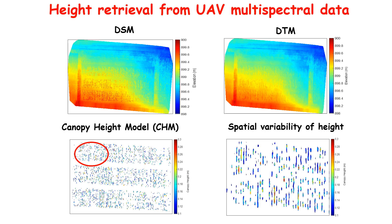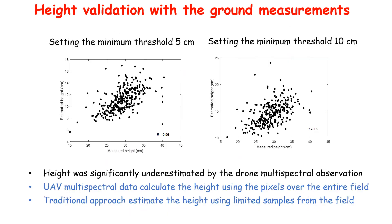Here is the height retrieved from the UAV multispectral data. We performed the subtraction between the DSM and DTM in order to calculate the Canopy Height Model. From the Canopy Height Model, we can capture the spatial variability of the crop height within a single field and across different fields. The retrieved height was validated with ground measurements, but we observed a strong underestimation issue. This is understandable because the UAV multispectral data uses all available pixels within a single field, while the traditional sampling approach only selected a limited number of samples for the ground measurement.